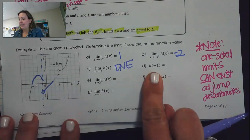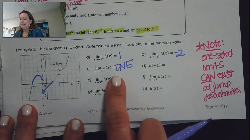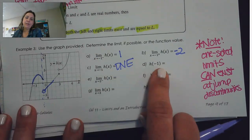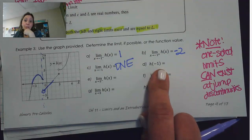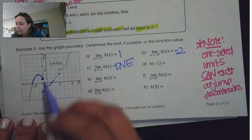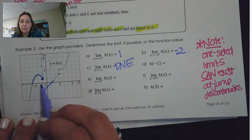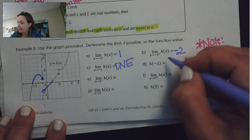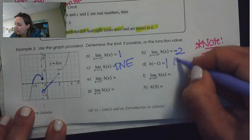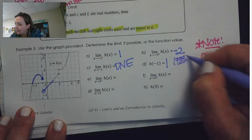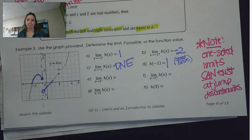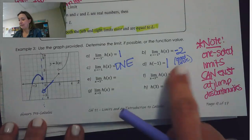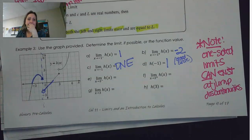What about H of negative 1? Just because the limit doesn't exist doesn't mean that we can't have a function value — remember, those don't have anything to do with each other. Do we have a closed circle at x equals negative 1? We did. We had a closed circle right there, and when x was negative 1 the value of the function was 1. So the function value does exist. Here's a case where the value of the function can exist but the limit doesn't necessarily exist.